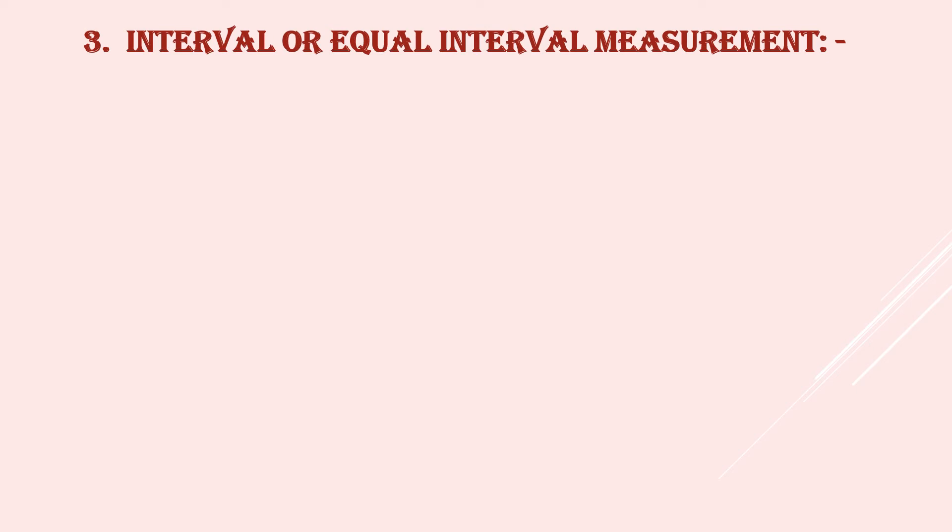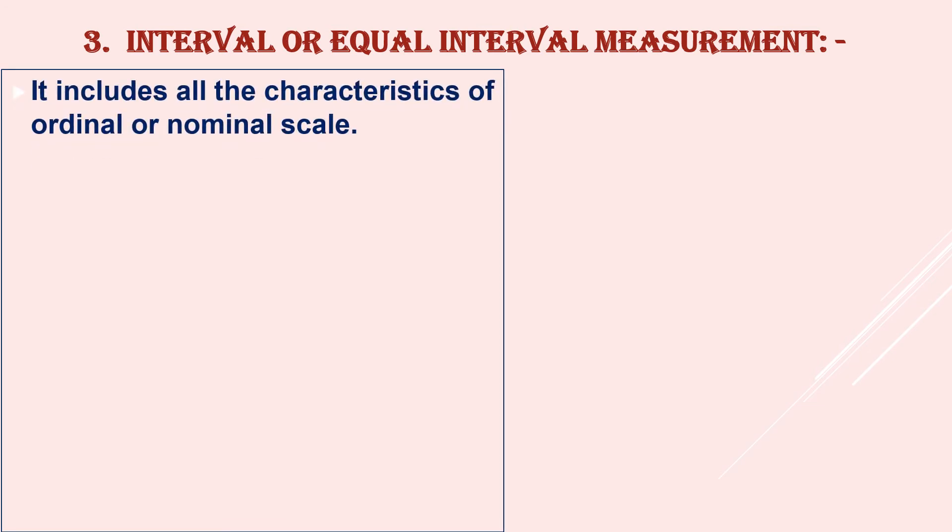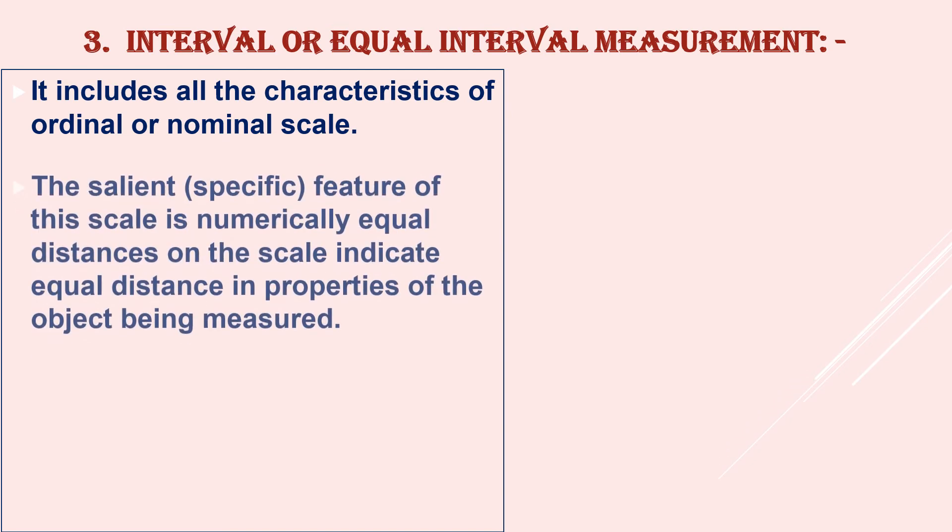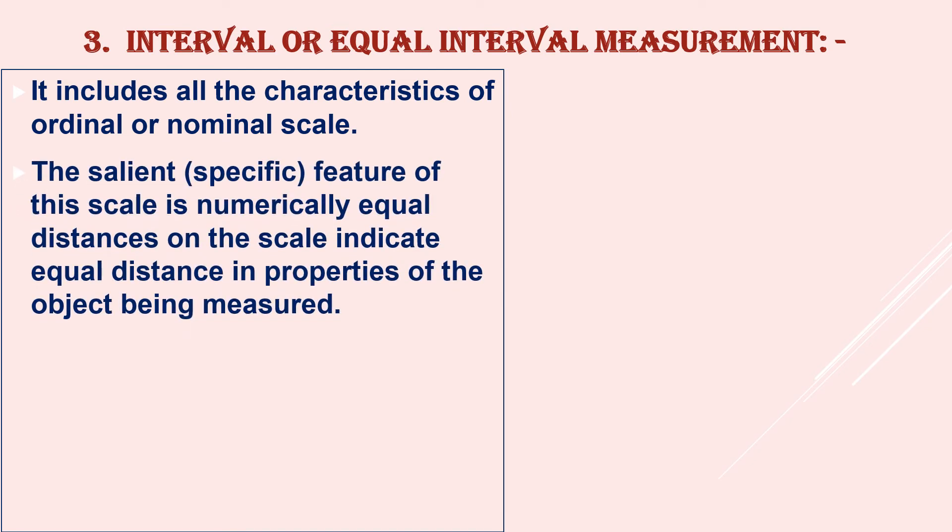The third scale is interval. Third scale is interval, or we say it is an equal interval measurement. It includes all the characteristics of ordinal or nominal scale. The specific feature of this scale is numerically equal distances on the scale indicate equal distance in properties of the object being measured. Here the unit of measurement is constant or equal.